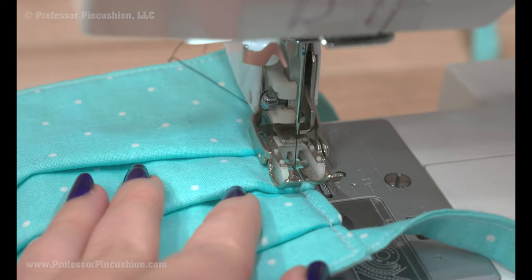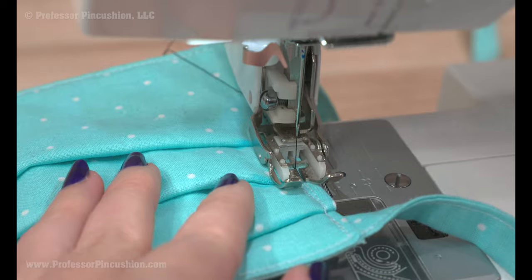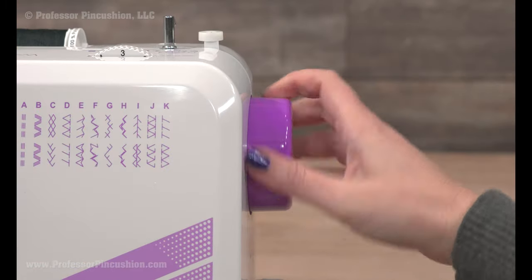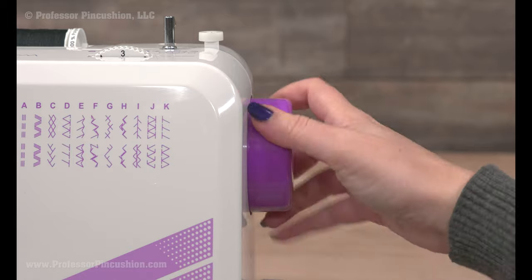Sew slowly over difficult areas. If you try to sew fast, you might break a needle. For getting over hard spots, use the hand wheel to manually sew instead of using the foot pedal.